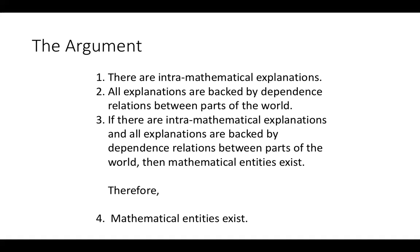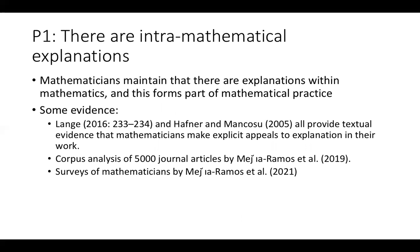The basic idea is: if you think all explanations must be backed by dependence relations between bits of the world, and you think there are genuine explanations inside mathematics, then you're going to have to find dependence relations between things in the world that back those explanations — and so there's got to be something in the world joined by those dependence relations. I don't expect you to buy the argument yet. I'll now go through each premise, tell you something in favor of it, and then turn to what happens if you give up on some of these premises.